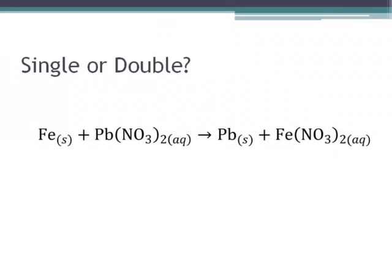If we look at this one, I see a single element and a compound, a single element and a compound, so this is a single displacement reaction. You can see the iron and the lead have traded spots from the reactant side to the product side.